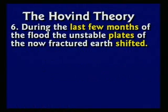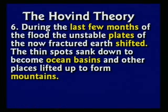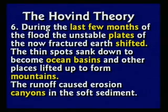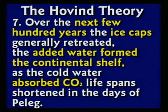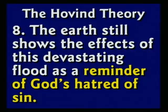During the last few months of the flood, the unstable plates of the fractured earth shifted. Pieces lifted up, others sank — thin spots filled with water to make oceans, and lifted areas became mountain ranges. Canyons were eroded quickly since the sediment was still fairly soft. Over the next few hundred years, ice caps retreated from Kansas City back to Alaska, adding water to the oceans — making them colder, deeper, and wider, which is why we have a continental shelf. Cold water absorbed carbon dioxide, and life spans were shortened in the days of Peleg due to lack of greenhouse gases allowing more radiation in. The earth still shows the effects of this devastating flood as a reminder of God's hatred for sin.